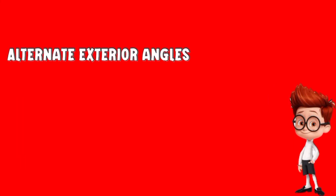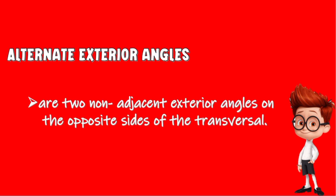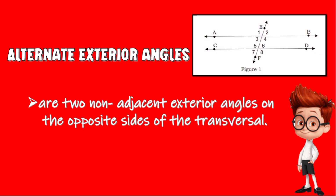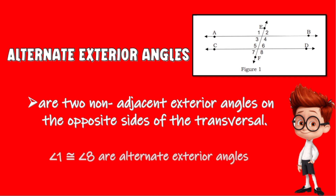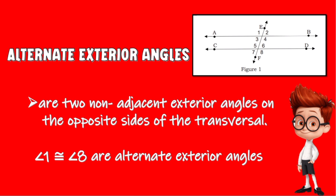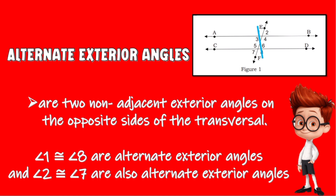Alternate exterior angles are two non-adjacent exterior angles on the opposite sides of the transversal. Based on the figure, angle 1 is congruent to angle 8 because they are alternate exterior angles. Angle 2 is congruent to angle 7 — they are also alternate exterior angles.